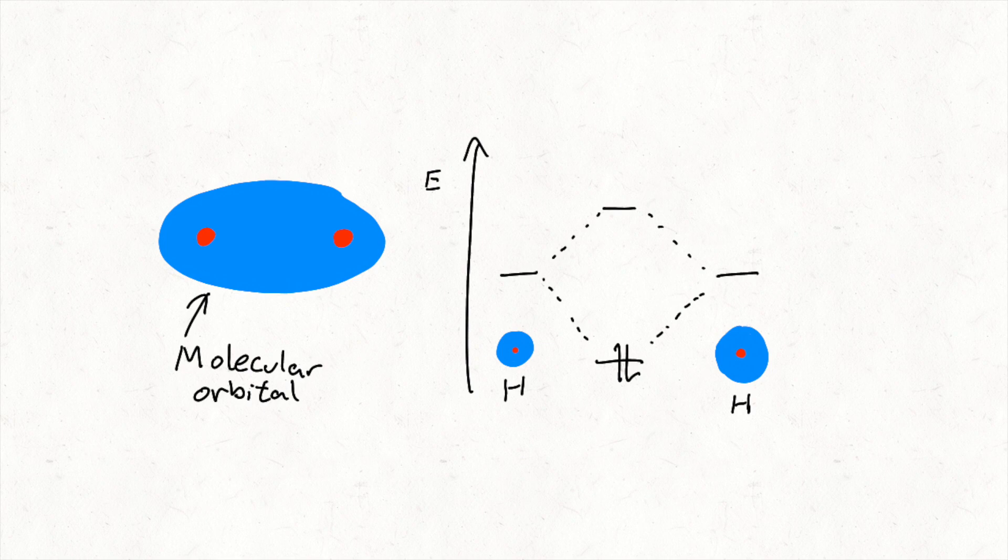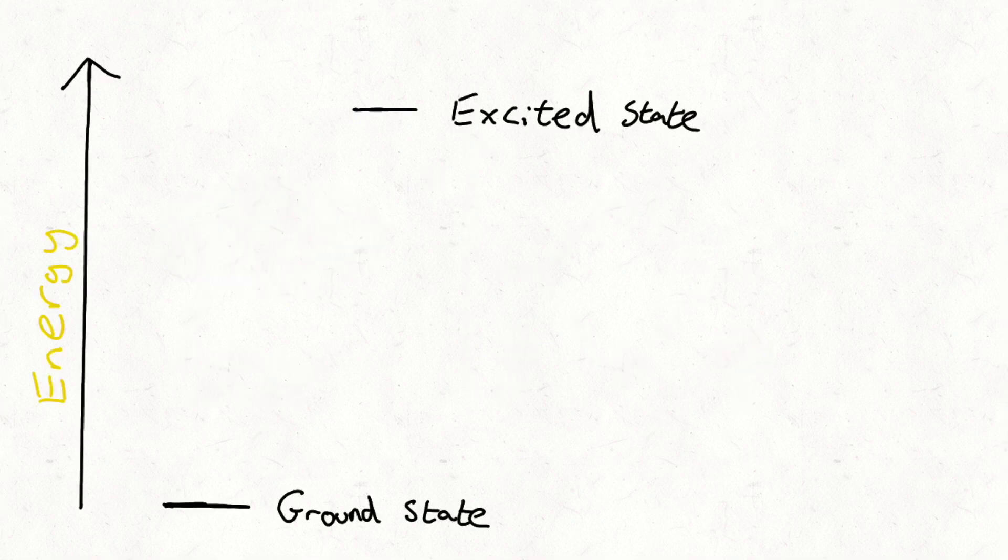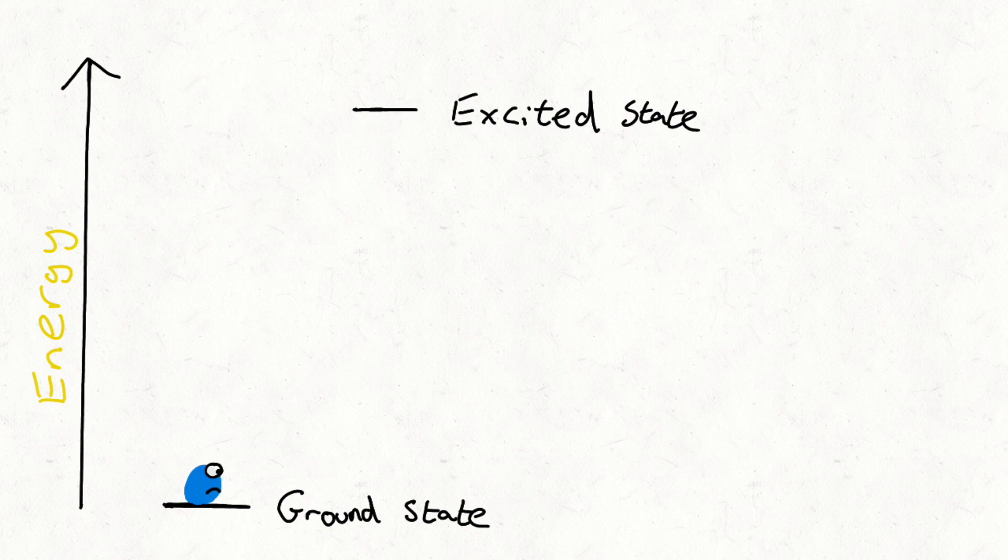These atoms or molecules want to be as low in energy as possible. So these electrons arrange themselves in the lowest possible state, the ground state.